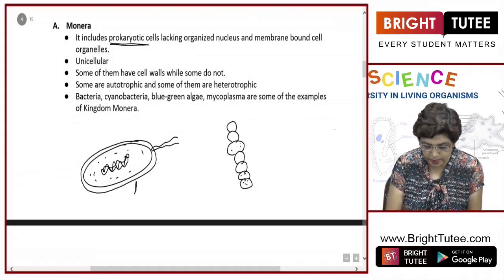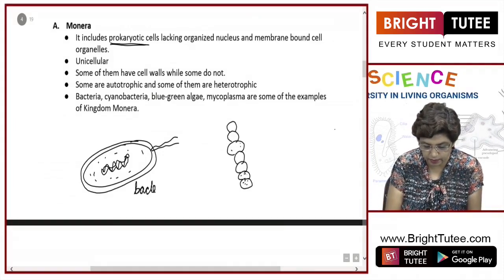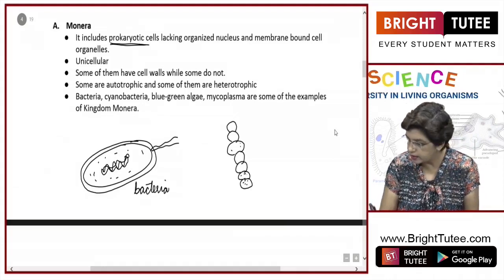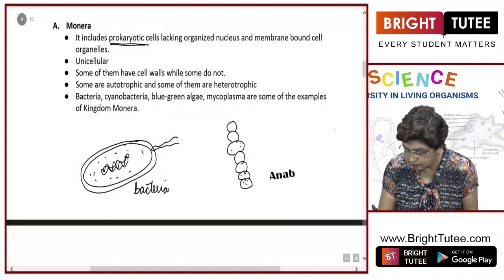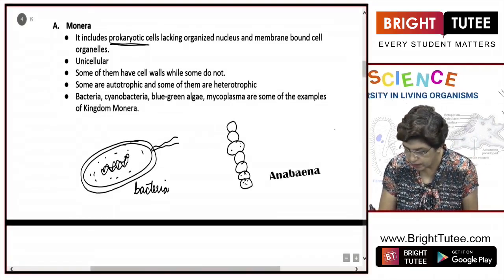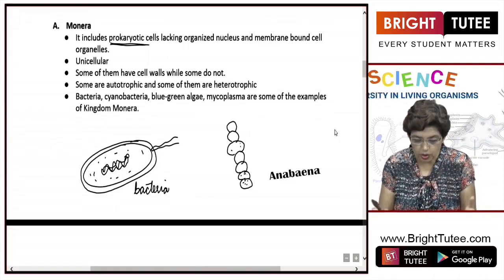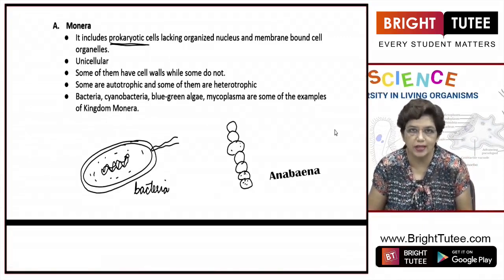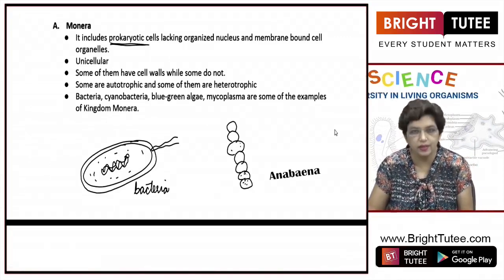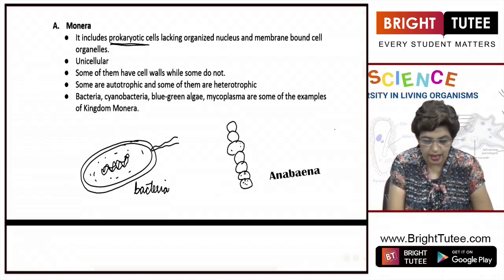This is bacteria, and this one is Anabaena. This diagram will help you understand what Monera actually are. They have prokaryotic cells.